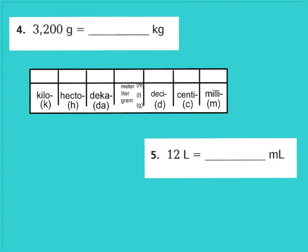So my equation is 3,200 divided by 1,000. Remember our chant: when you multiply, you move your decimal to the right; when you divide, you move your decimal to the left. We're going to move our decimal three places to the left — one place, two places, three places. So my decimal should be between my 3 and my 2. Therefore, 3,200 grams is equal to 3.2 kilograms.